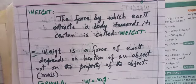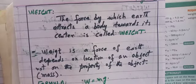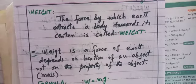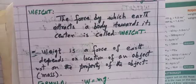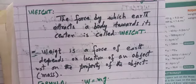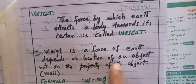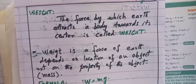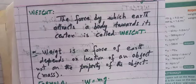Weight is a force that depends on location — meaning when an object is farther from the earth's center, its weight is less, and when it is closer to the earth's center, its weight is more. At the poles — North Pole and South Pole — the weight of objects increases because the earth is flattened there, bringing the surface closer to the center. So weight depends on the location of an object, not on the property of the object.